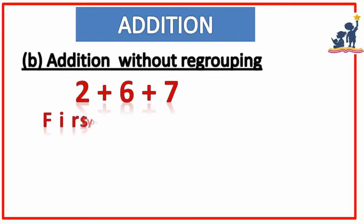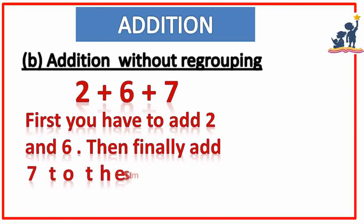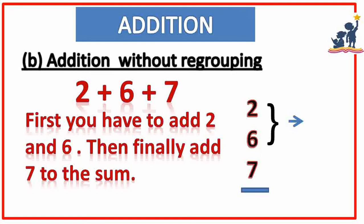B: addition without regrouping. For 2 plus 6 plus 7, first you have to add 2 and 6, then finally add 7 to the sum. You can see in the solution: first, we add the first two numbers, that is 2 plus 6 is equal to 8. Then with 8 we add the third number, that is 7, and the solution becomes 15.